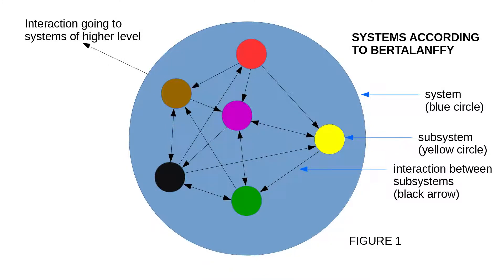Looking at this first figure, you will see one big blue circle and several small circles inside it. This diagram shows how Bertalanffy's description of the universe around us works. The big blue circle is called a system and may represent anything in our world — a human body, a living cell, an electronic radio, a steam engine, planet Earth, an atom or molecule, etc. It can be a representation of anything in this universe and is always just a section of it.